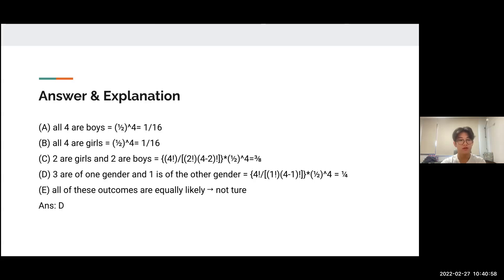Choice C is where things become more complex: two girls and two boys. We use the combination formula from earlier. We have to choose two positions to be girls and two to be boys among four positions. Since we're choosing genders, we also multiply by 1/16 as calculated in A and B. The outcome turns out to be 3/8.